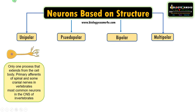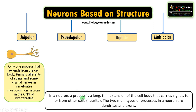Let's begin with the unipolar neuron. It has only one process that extends from the cell body. In the case of a neuron, a process is a long, thin extension of the cell body that carries signals to or from other cells — also called a neurite. The two main processes in a neuron are the dendrites and the axon. A unipolar neuron has a single process or extension from the cell body.